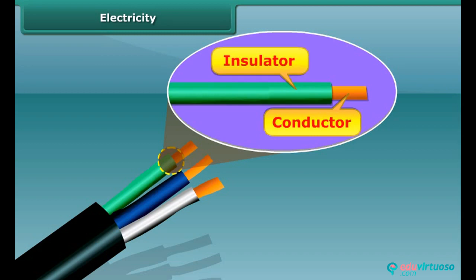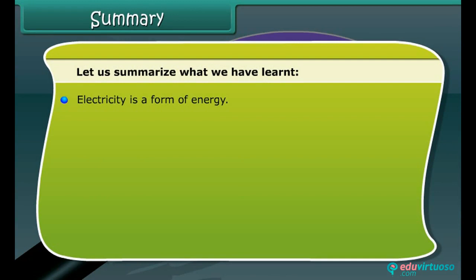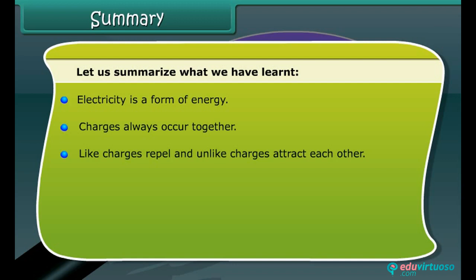Let us summarize what we have learned. Electricity is a form of energy. Charges always occur together. Like charges repel and unlike charges attract each other. The flow of electrons is called electric current. Lightning is an electric discharge in the sky. Cells are sources of electric current.